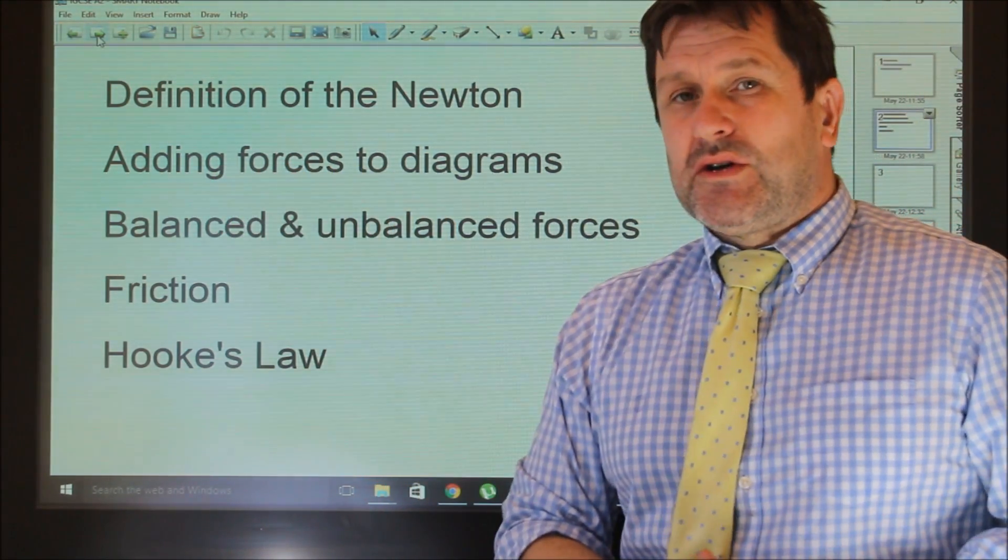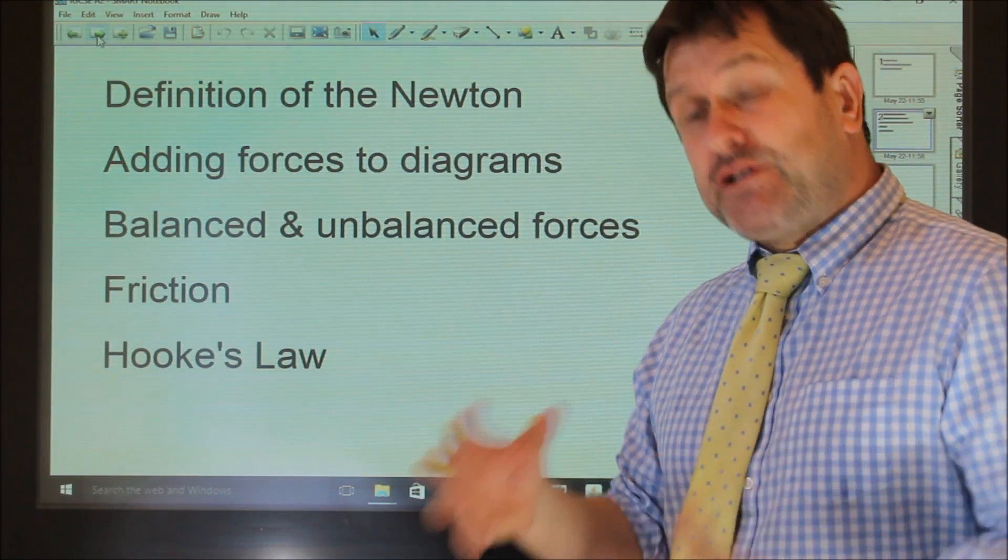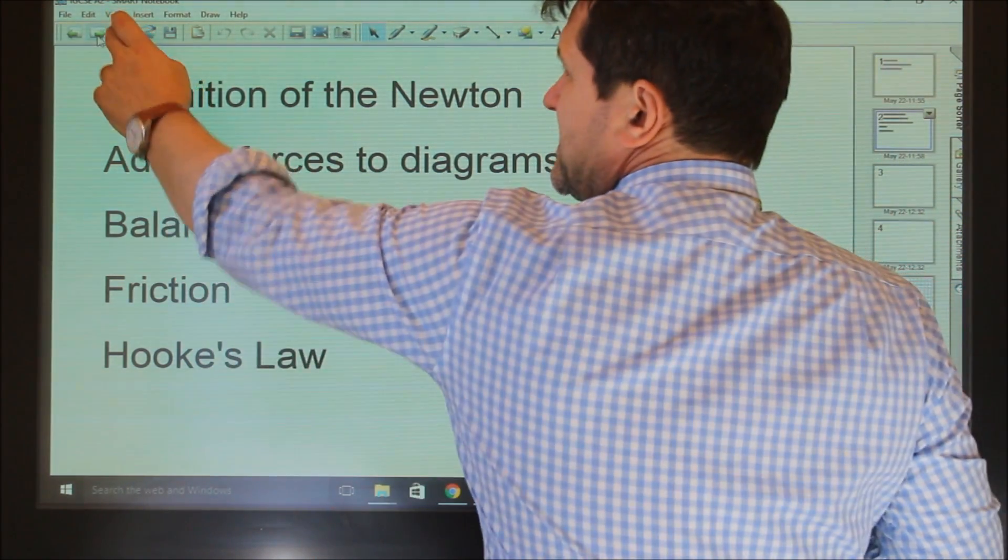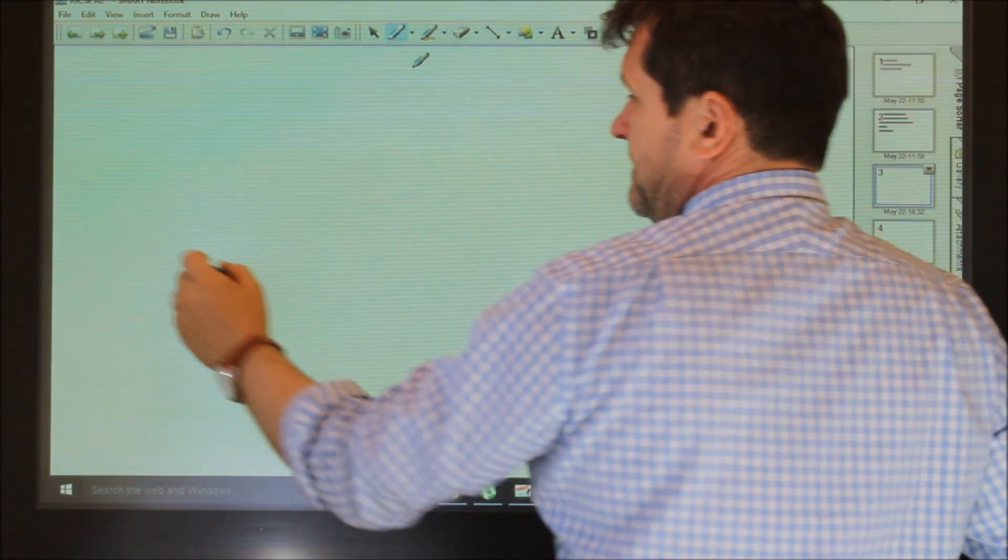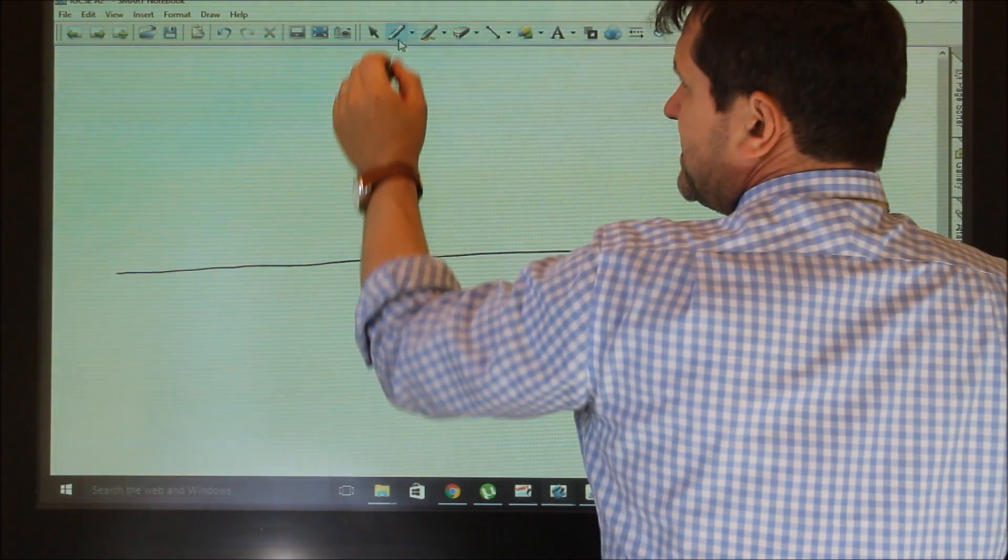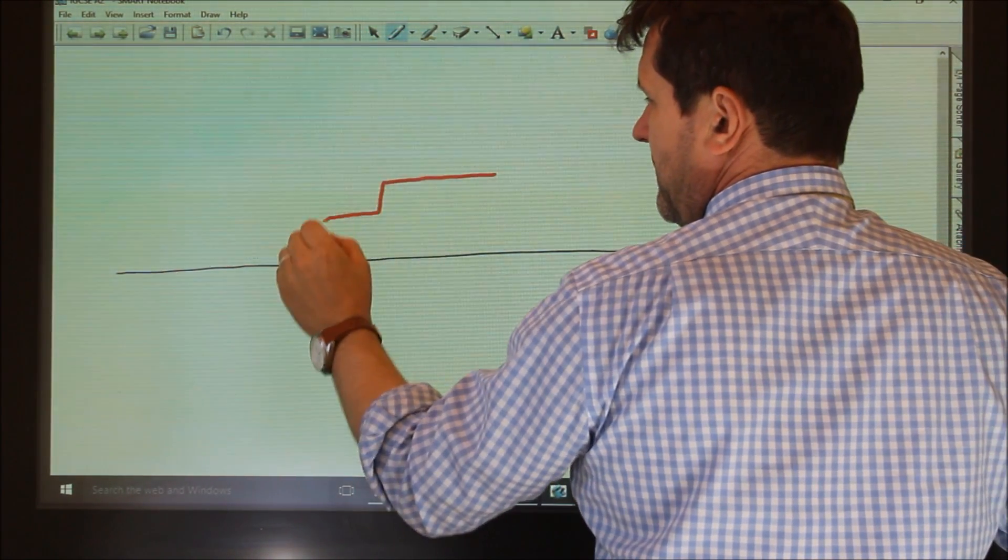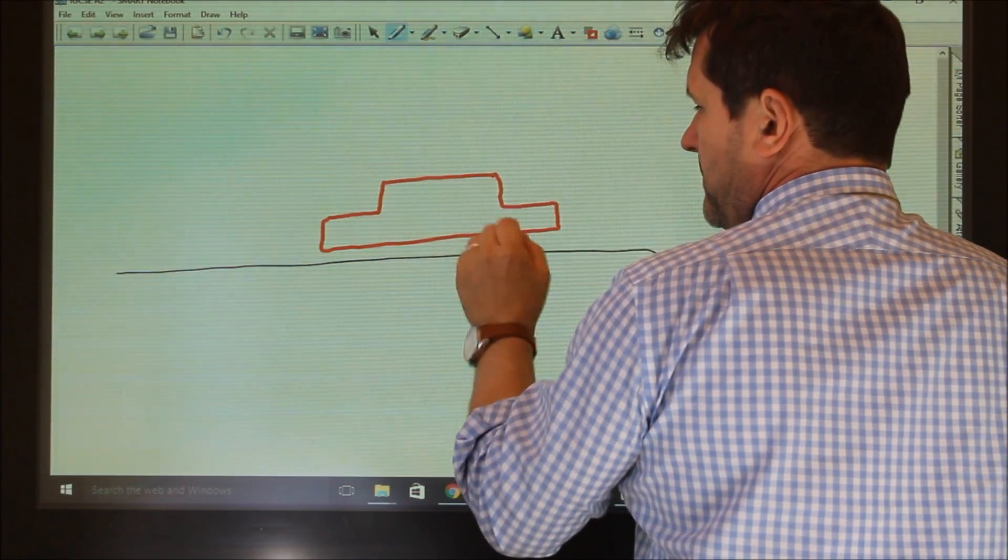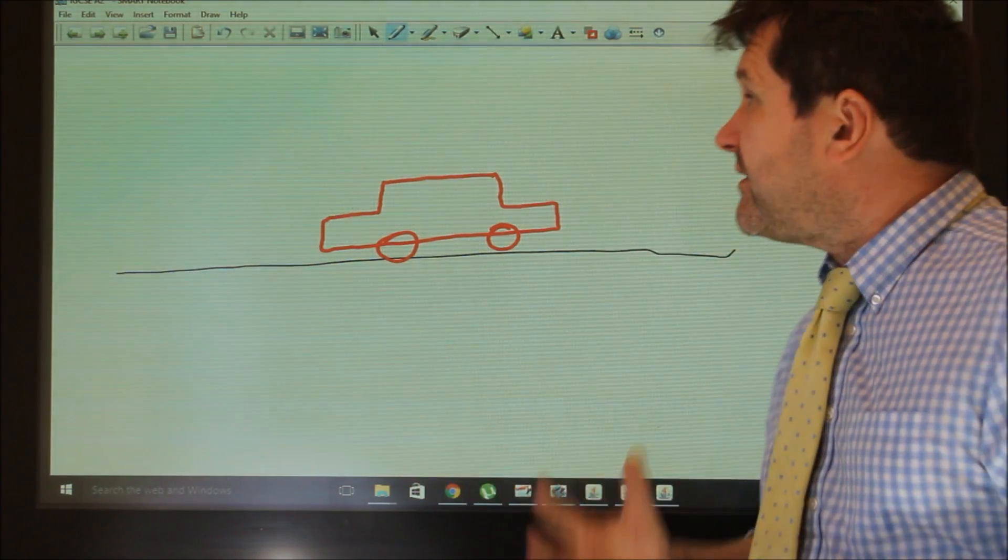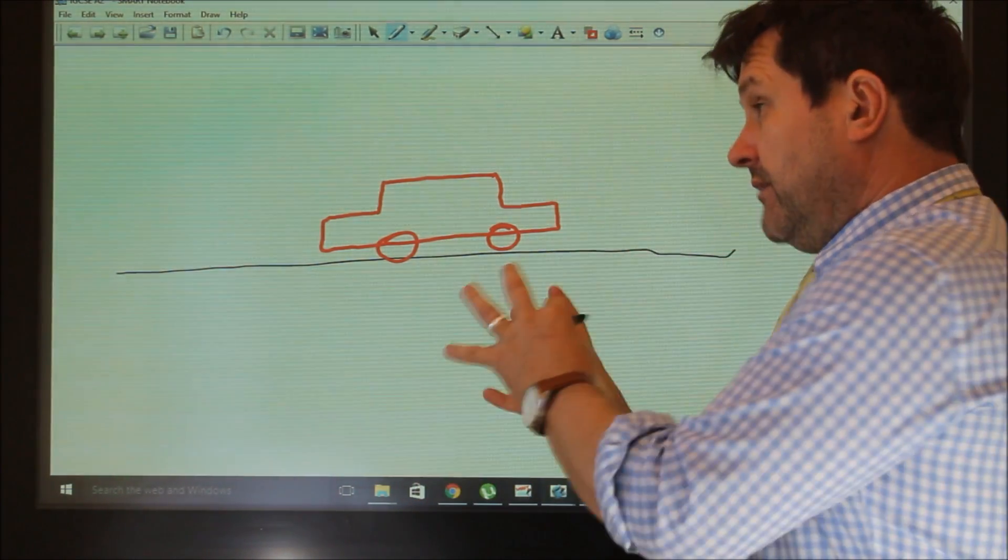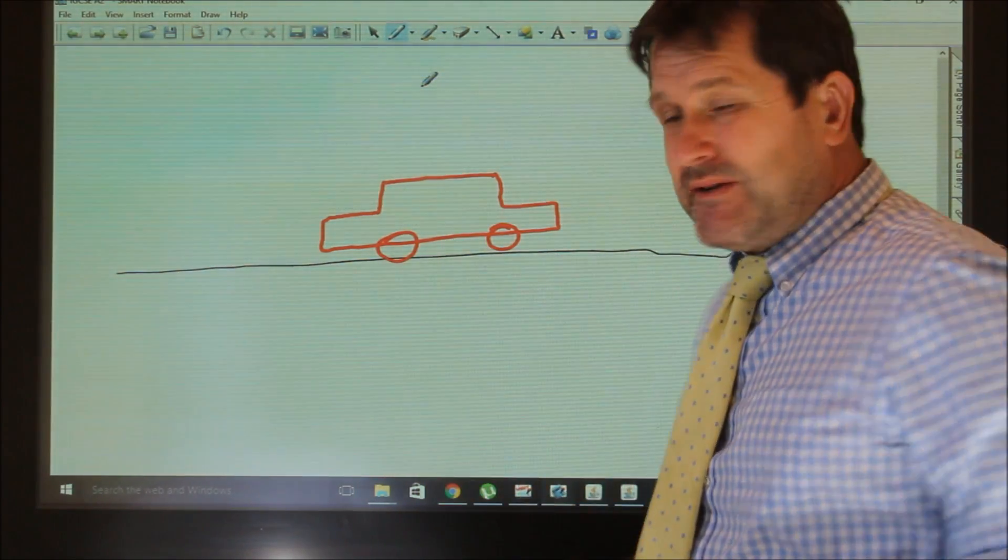Now, when we look at any diagram, we need to be able to add forces, force arrows, if you like, to the diagram. So, for example, if we took something standard on a car, if we have a car, my incredibly well-drawn car, if we have a car on a road, now we can see then there are forces on the car. Now, those forces should be represented by arrows.